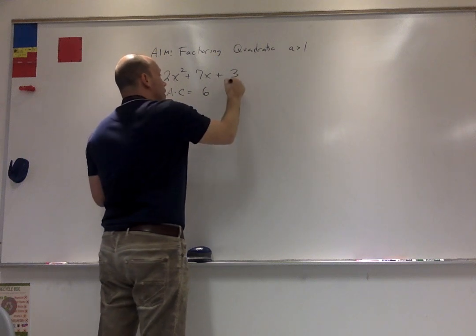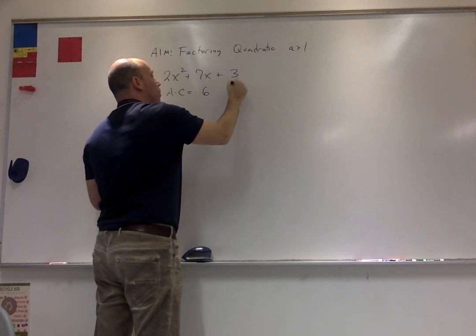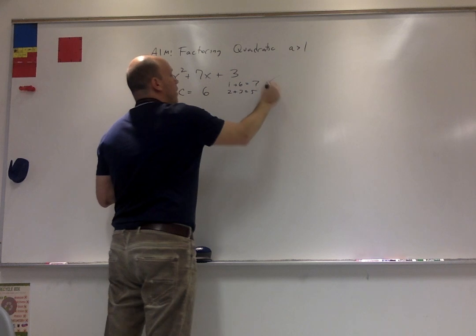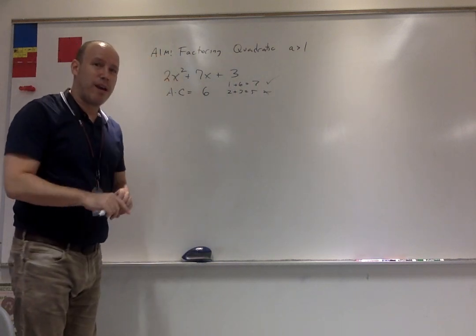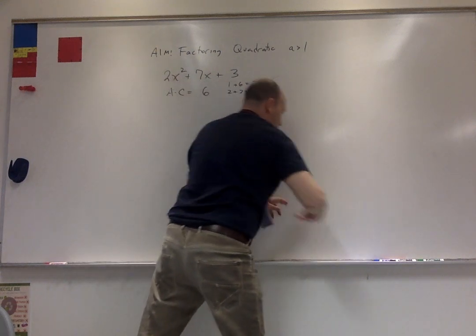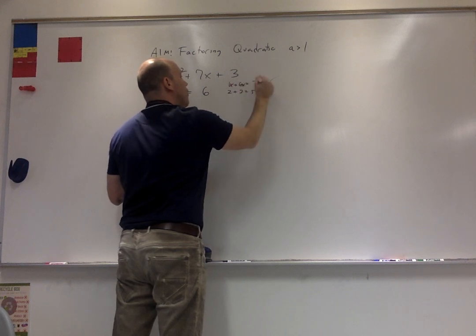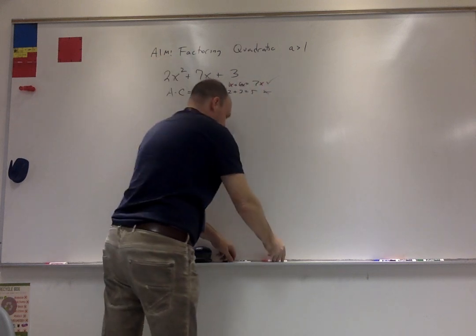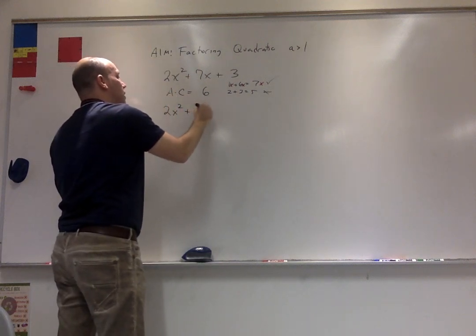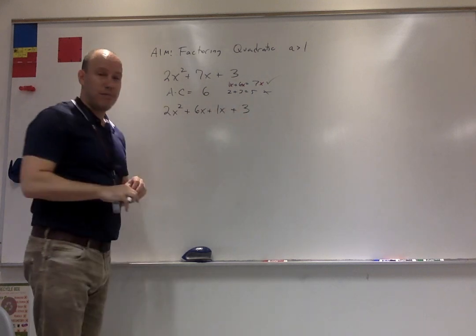So I know I have 1 times 6 and I have 2 times 3. Well, 1 plus 6 is 7. I have a match. 2 plus 3 is 5. That's not the match. Now, here's the trick. This 1 and the 6 are actually going to be a 1x and a 6x which equals 7x. You're going to rewrite this as 2x squared plus 6x plus 1x plus 3.